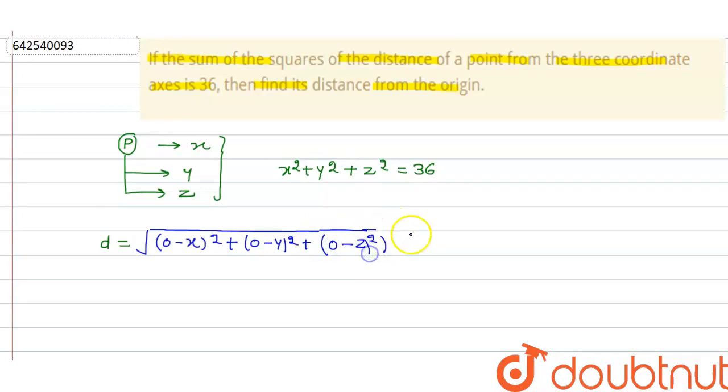So this can be given as under root x-square plus y-square plus z-square.